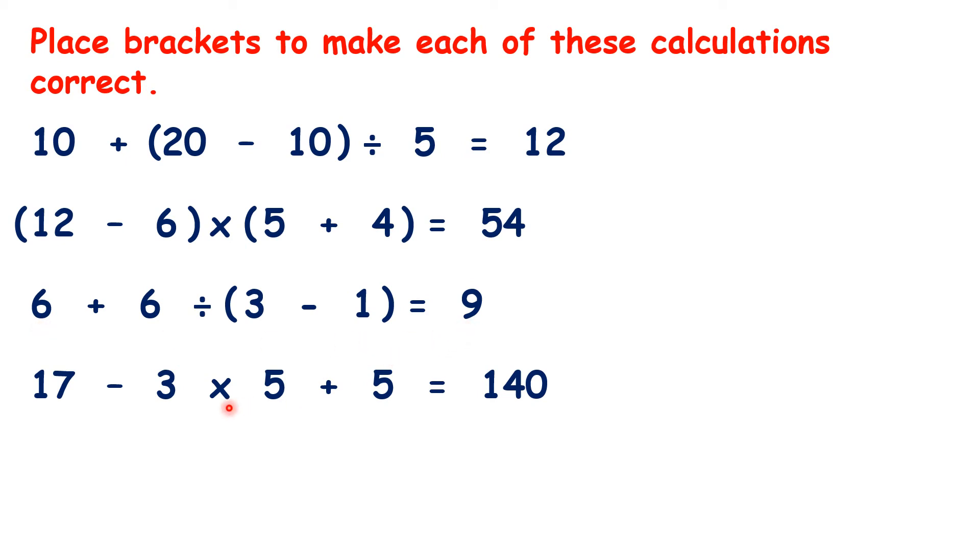And for this last question, we need 2 pairs of brackets. 17 minus 3 is 14, and 5 plus 5 is 10. So, then we have 14 times 10, so we get 140.